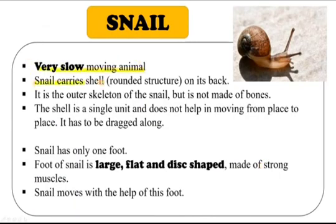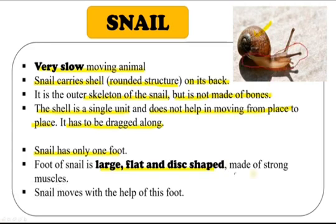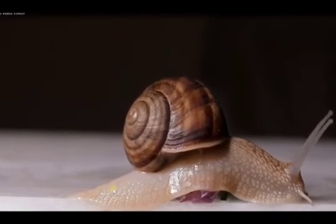The snail carries a shell — a rounded structure on its back. The shell is like the skeleton of the snail, but it is not made of bones. The shell is a single unit and does not help in movement; it is simply dragged along as the snail moves. A snail has only one foot, which is large, flat, and disc-shaped, made of strong muscles. The snail moves with the help of this foot.